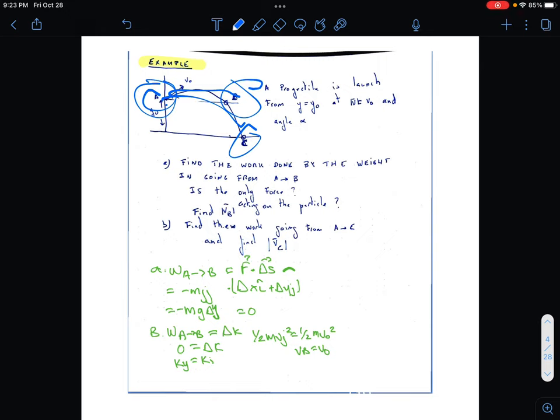All right, so we're going to have W, A going to B, equals F multiplied by delta S, negative M J times delta X J plus delta Y J.